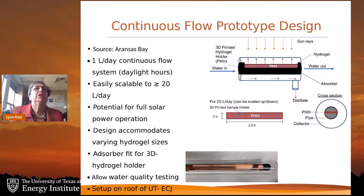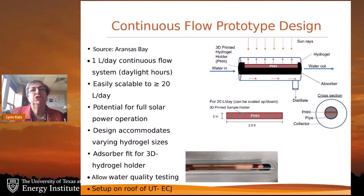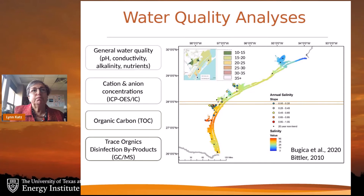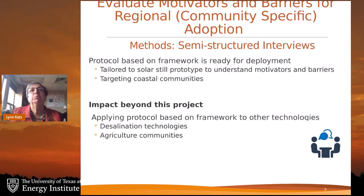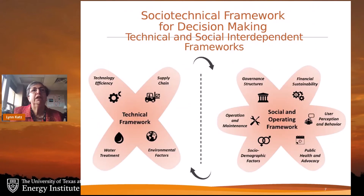This is a schematic of our solar system showing our panel within part of our prototype design, which is now sitting on the roof of the ECAJ building and operating. We are doing water quality analysis on this and scaling the system to use the available hydrogel to look at toxic organics. The other component of the work examines motivators and barriers for adoption, linking the technical framework to the social operating framework.